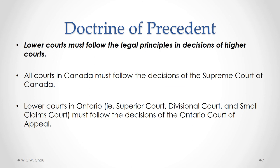The significance of having higher and lower courts is a legal doctrine called the doctrine of precedent. Under that doctrine, lower courts must follow the legal principles in decisions of higher courts. All courts in Canada must follow the decisions of the Supreme Court of Canada, which is the highest court in Canada. Looking at just Ontario, the lower courts — the Superior Court, Divisional Court, and Small Claims Court — all have to follow the decisions of the Ontario Court of Appeal, which is the highest court in Ontario.